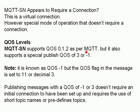If you publish a message with quality of service minus 1, it doesn't require the initial connection to be set up. It does require the use of short topic names or predefined topics, and it doesn't work with gateways.